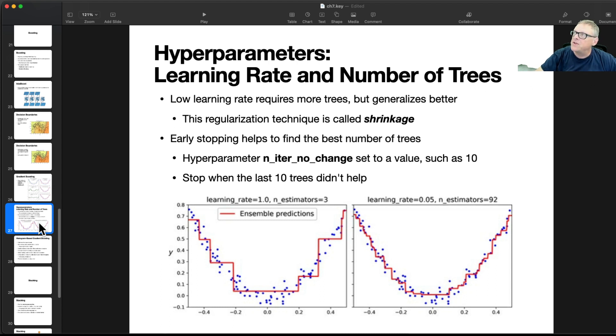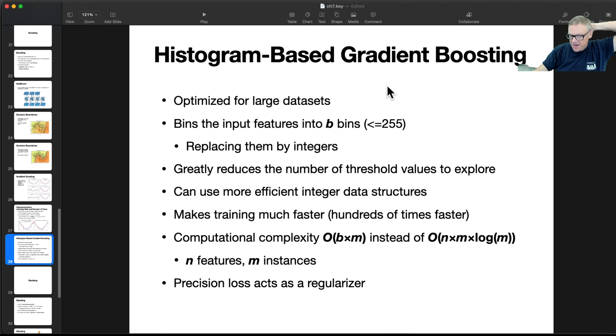All right, so there are hyperparameters to try to prevent these things from overfitting too much. If you have a low learning rate, you'll acquire more trees, but you'll generalize better, as we saw. That's called shrinkage. Early stopping, we talked about before in gradient descent models. You watch to see when trees didn't help. So you, number of iterations with no change, so if the last ten trees didn't help, then you stop adding trees. So here for example, you have three estimators, with a learning rate of one, so the ensemble prediction does this, and when you get up to 92 estimators with a learning rate of .05, you get really a pretty good fit to the data. And you know, you can stop when adding more trees is not making it any better. And you measure the error by mean squared deviation, or something like that, the various ways to measure it.